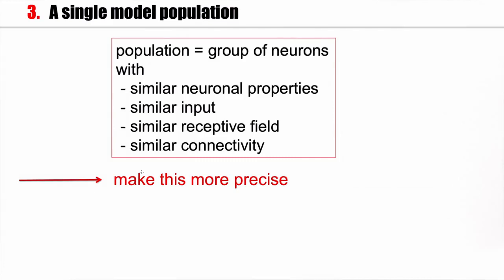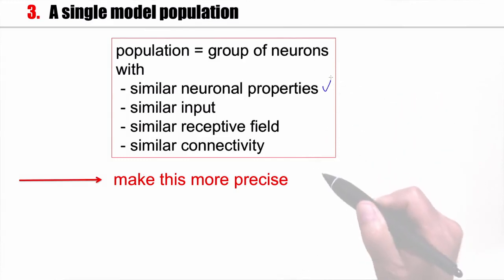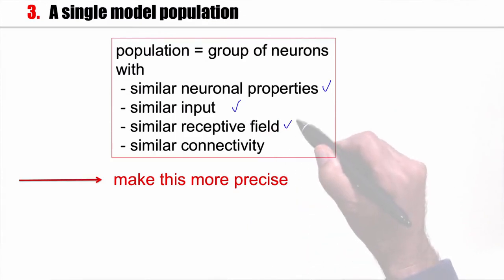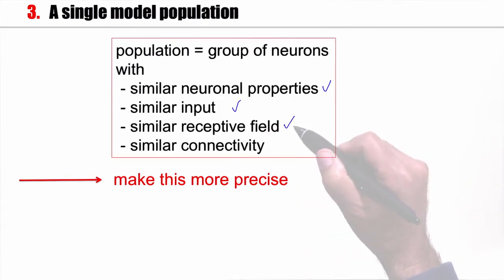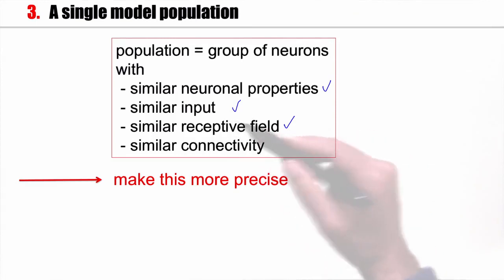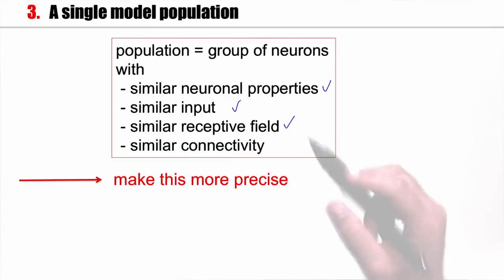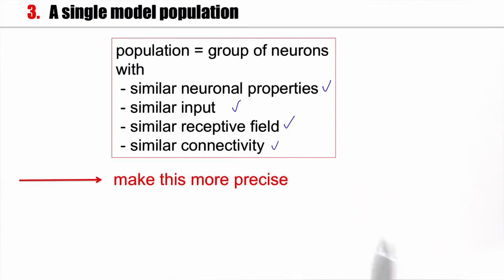Let's start with the loose definition. A population is a group of cells with similar neuronal properties — cells that receive similar input. For example, there could be neurons that have very similar receptive fields, so that if you present a visual stimulus, the input to all these cells will be roughly the same. Moreover, I would like to require that these neurons have similar connectivity.